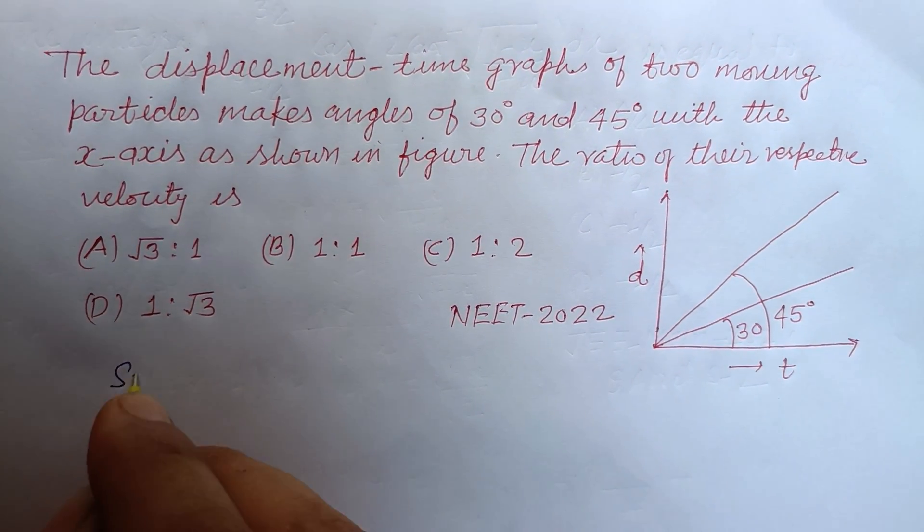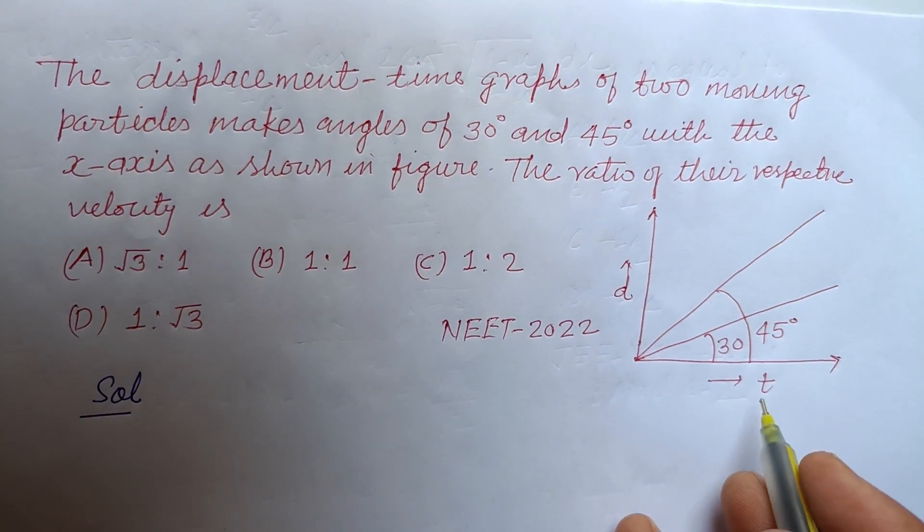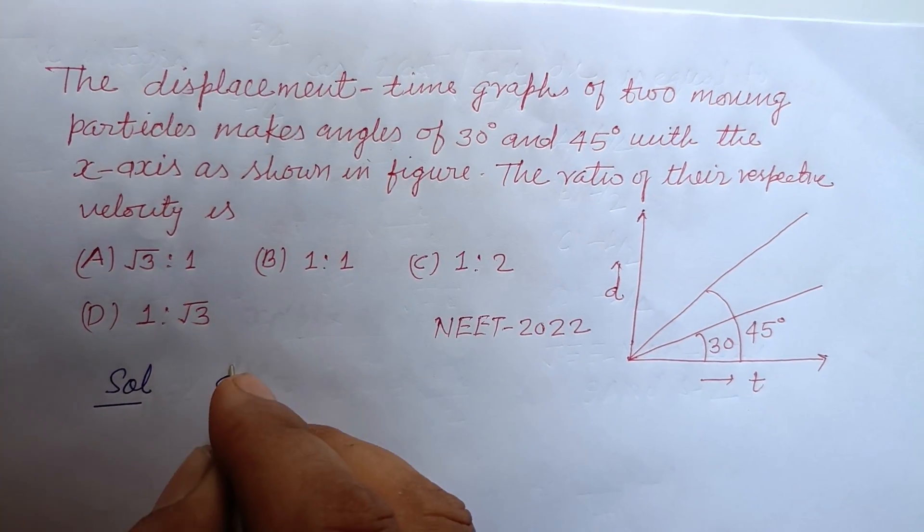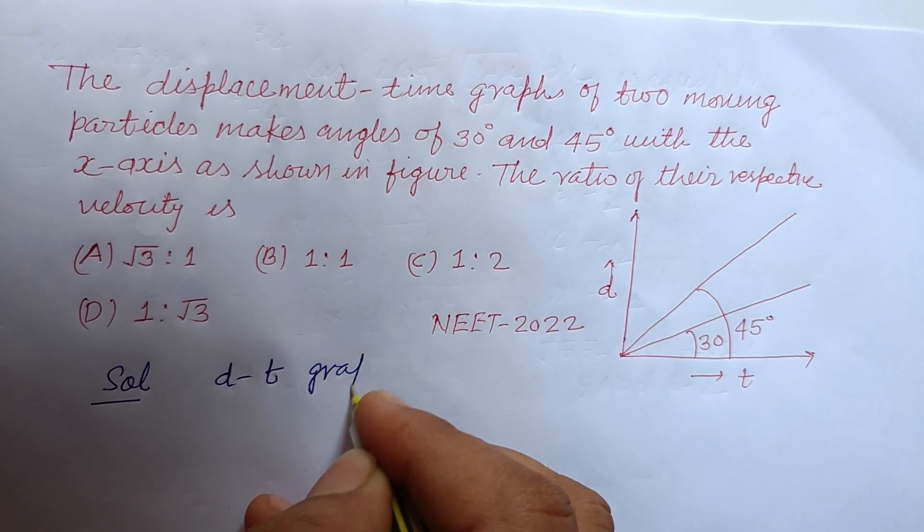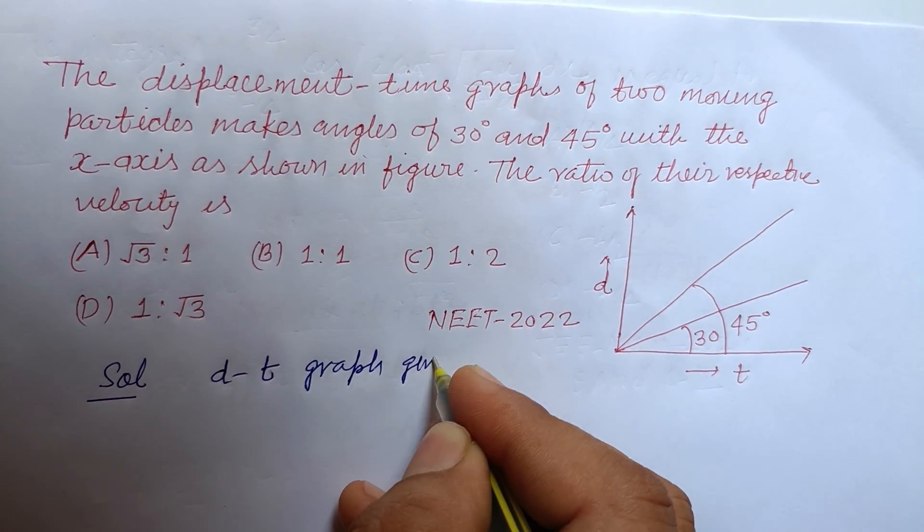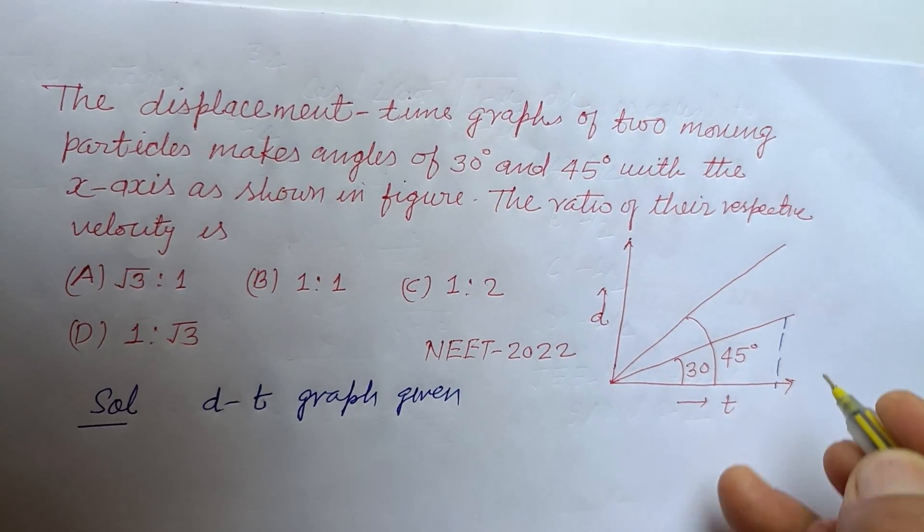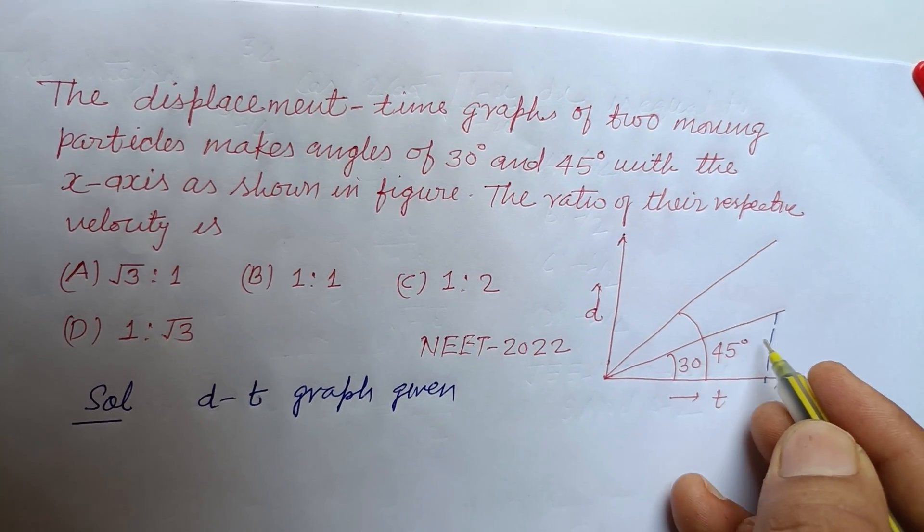So students, here a graph of two particles is given between displacement and time, a d-t graph. So first we take this first particle, so this is 45 and this is t and this is d.